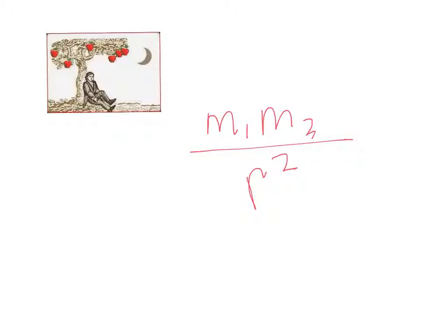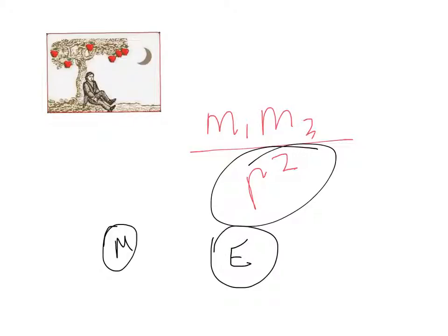That distance squared is what affects it the greatest. Because if you have the moon and the Earth, the Earth is many times bigger than the moon. So this radius is what's affecting them.